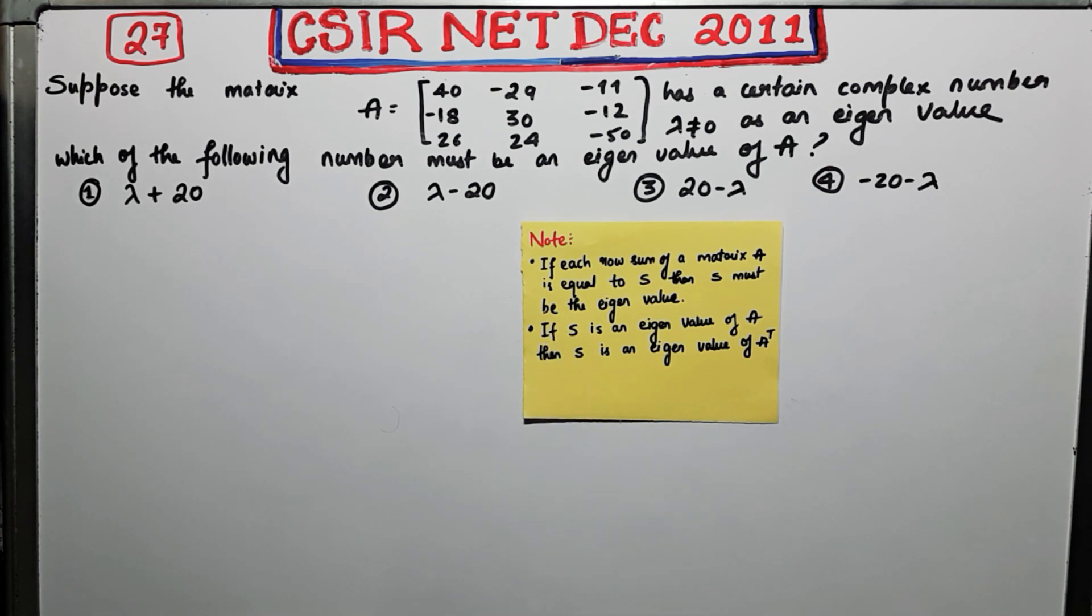Now what note number two is suggesting us, we don't need it. But I am just telling you that if S is an eigenvalue of A, then S is an eigenvalue of A transpose. You are getting my point.